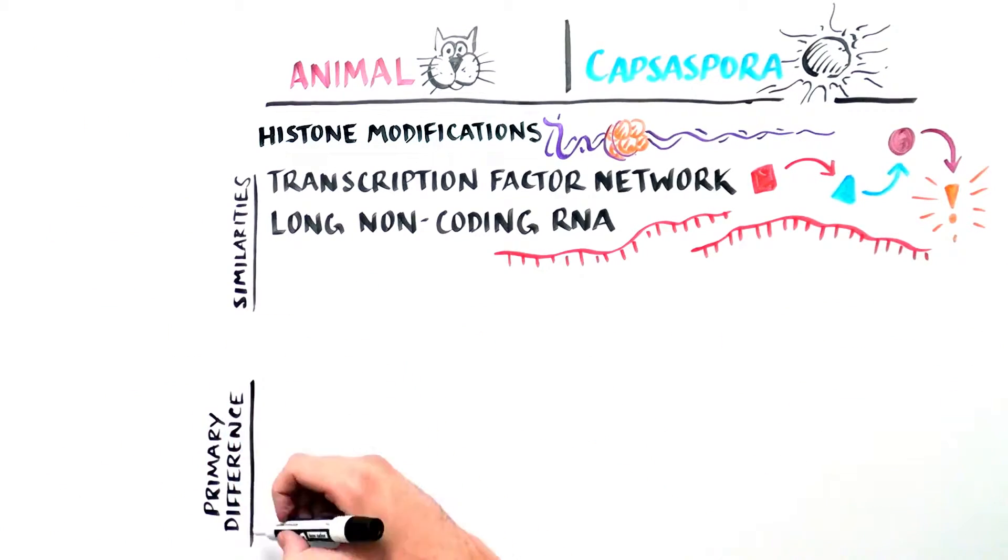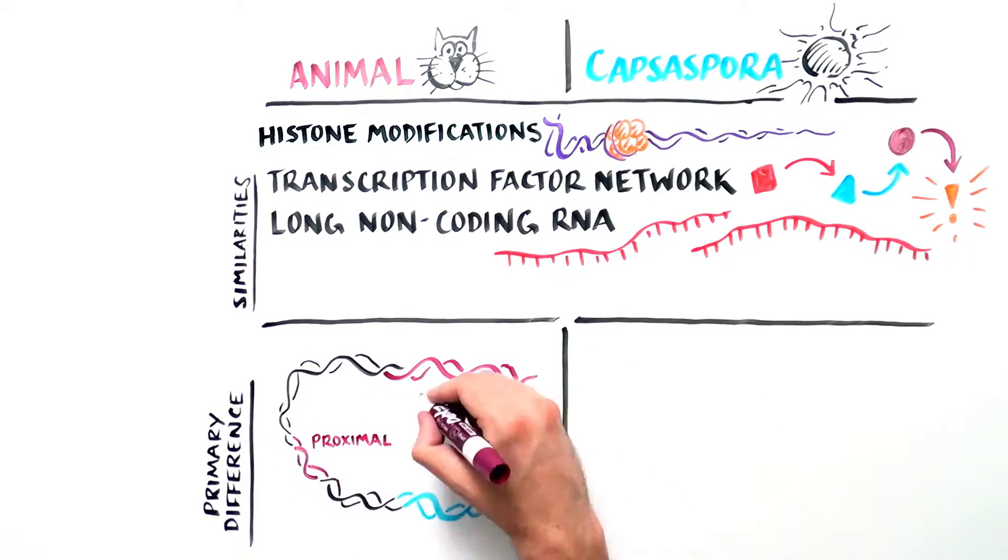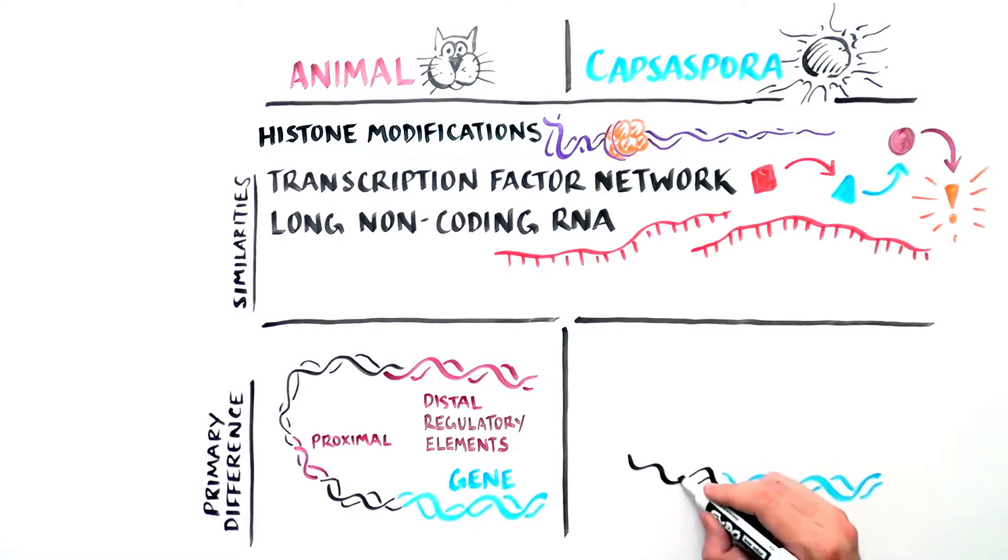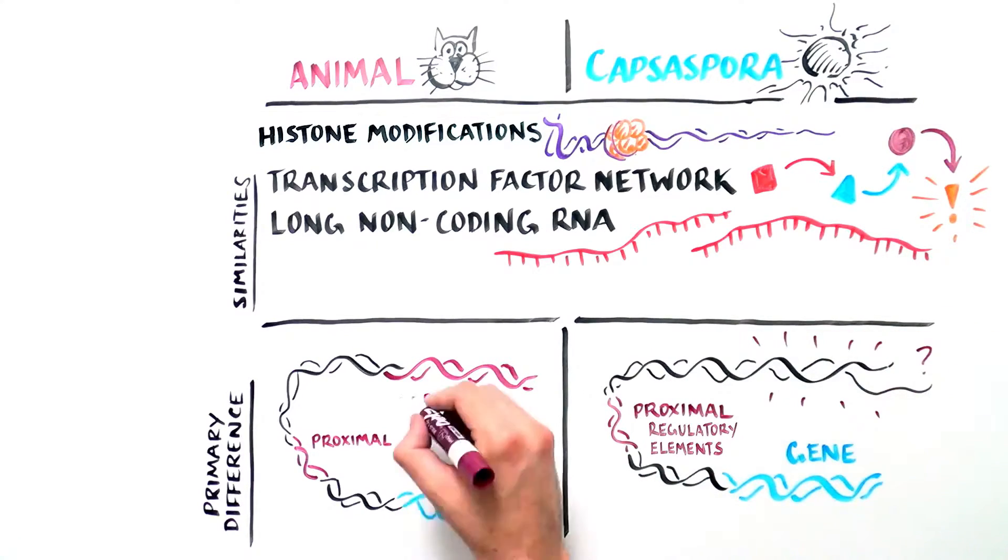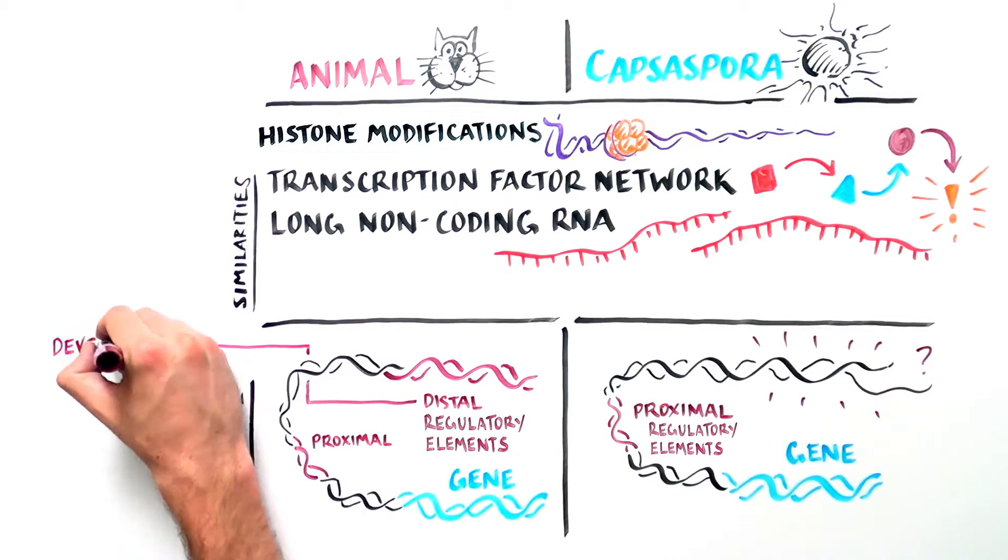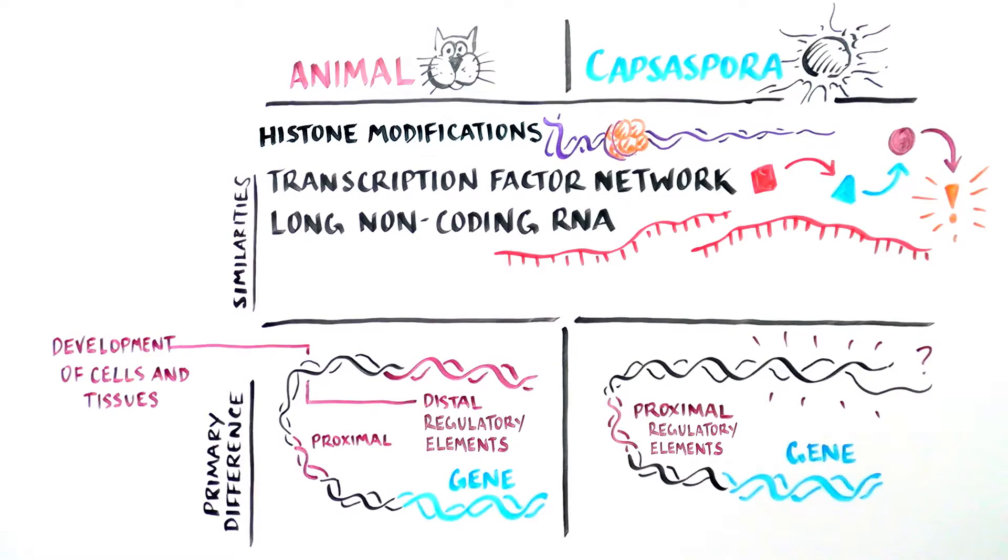A key difference between Capsospora and animals was the presence of distal cis-regulatory sites in the animals which were completely absent in this single-cell amoeba. It turns out that these sites, known as enhancers, are critical for the development of different cell types and tissues in animals.